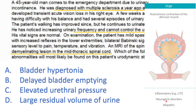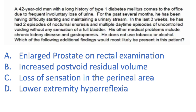The answer on urodynamic studies is bladder hypertonia — just as there is hypertonia in his limbs and a Babinski sign, all characteristics of upper motor neuron lesions apply to the detrusor as well. Delayed bladder emptying and large residual volume are seen with overflow incontinence. Elevated urethral pressure is also overflow. Since the lesion is mid-thoracic — above the sacral cord — it is an upper motor neuron lesion.